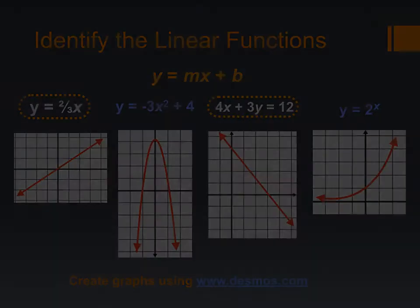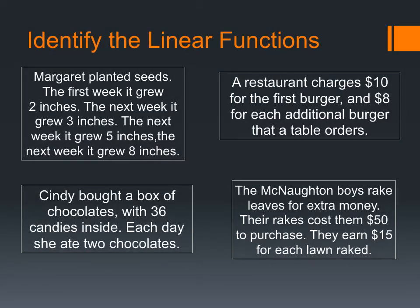Let's move on to contextual situations. We have four story problems here. We're talking about Margaret who's planting seeds, and every week the plant is growing by a certain amount. Cindy bought a box of chocolates and each day she ate a certain amount of chocolates. A restaurant charges $10 for the first burger and then $8 for each additional burger. And the McNaughton boys are raking leaves. The rake costs them $50 to purchase, but they're earning $15 for each lawn raked. Turns out three of these are linear because they have a constant rate of change and there is only one that is non-linear.